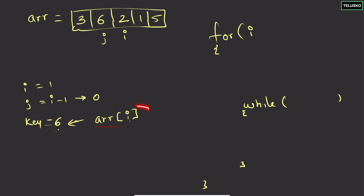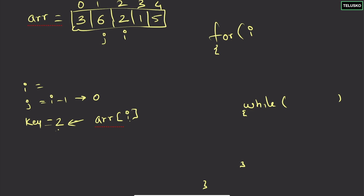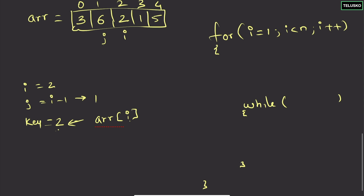Now arr[i] is two, so key is two. i is now at index two, and j starts at i minus one, which is index one. We apply the condition: i starts from one, goes until i is less than the array length, incrementing each time. We assign key as arr[i].